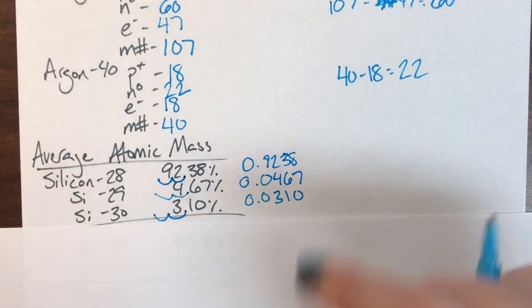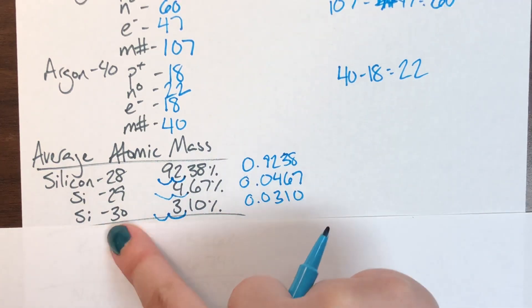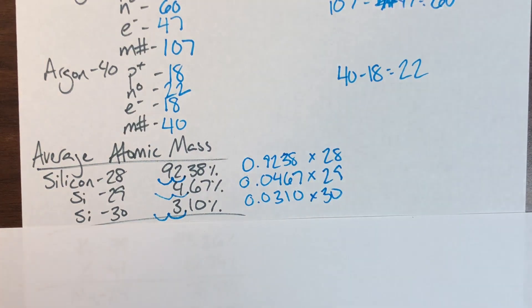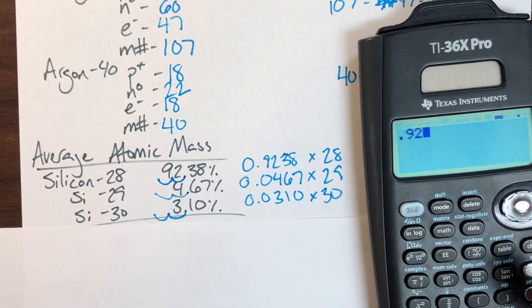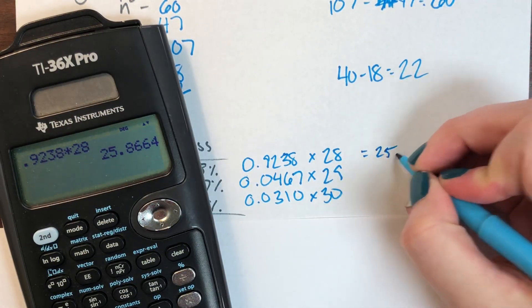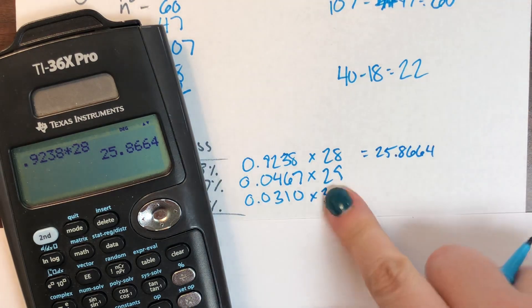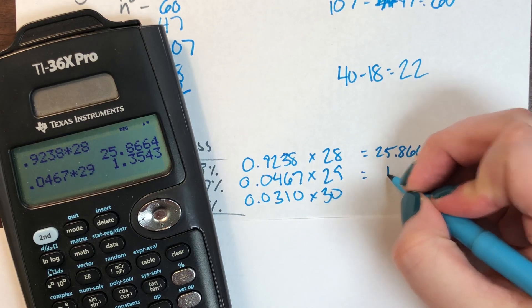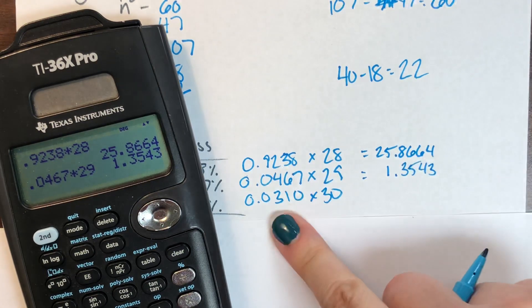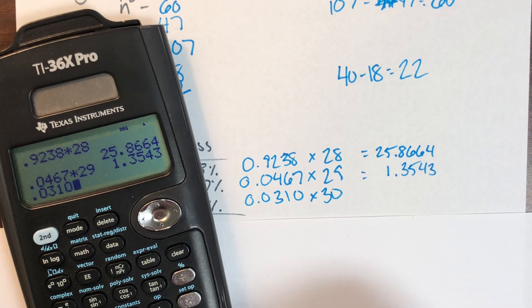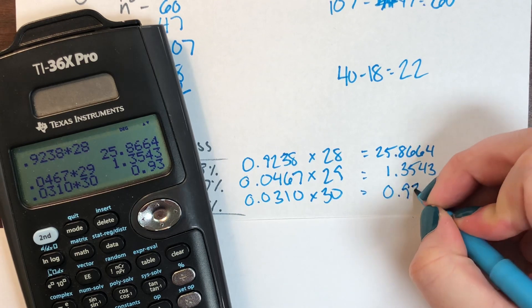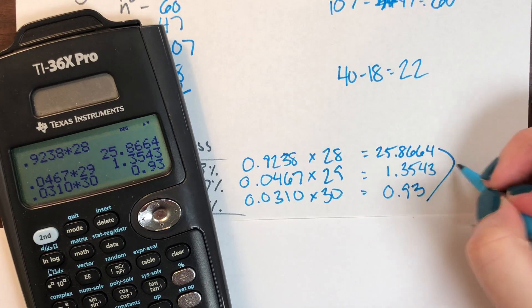Step two is to multiply the decimal abundances by their respective masses. So 0.9238 times 28 gives 25.8664; 0.0467 times 29 gives 1.3543; and 0.0310 times 30 gives 0.93. The last step is to sum all of those up.